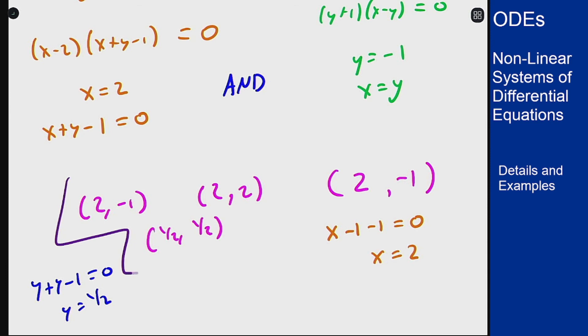That's how you can go through and take a non-linear system and look at where the equilibrium solutions are for that system. The point is all derivatives, in this case we only had two, must be zero. So we have equations for those and make sure the points you pick will make each of the equations zero all at the same time.